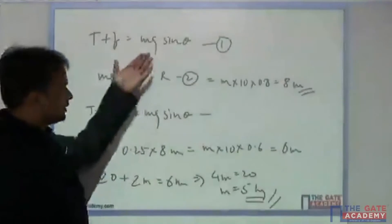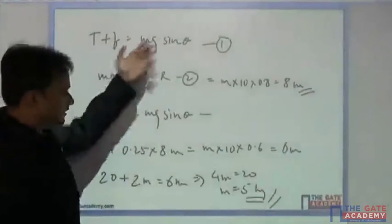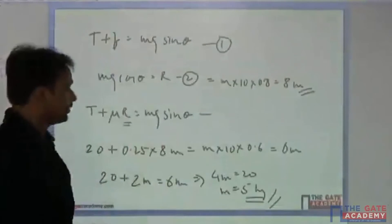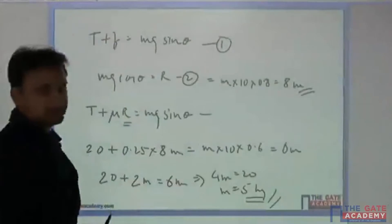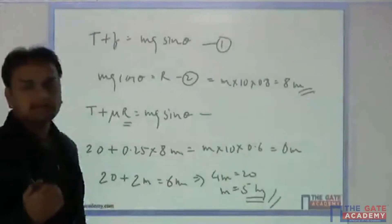If you simplify these equations, T plus f equals mg sin theta is one relation. Another relation is mg cos theta equals R, where R is the normal reaction.